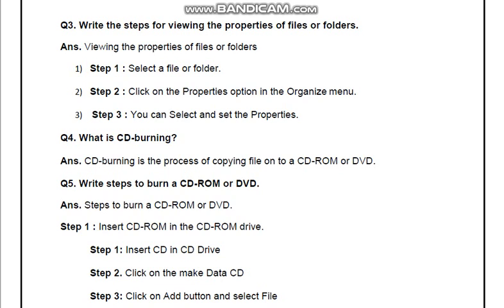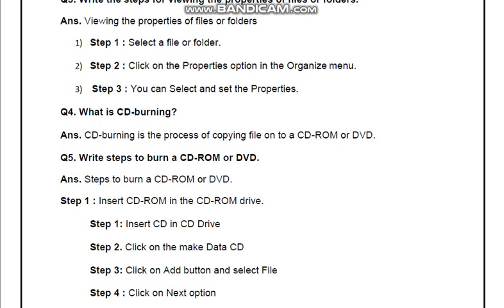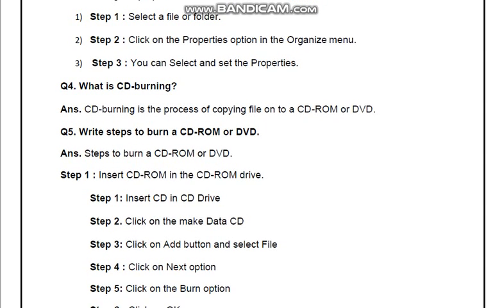Step 3: You can select and set the property — iske baad jo properties ka function hota hai usko select karo, isse hum properties ko check kar sakti hain. What is CD burning? CD burning is the process of copying files onto a CD-ROM or DVD. CD burning ek process hai jisme kisi bhi file ki copy karna CD-ROM or DVD par hota hai.